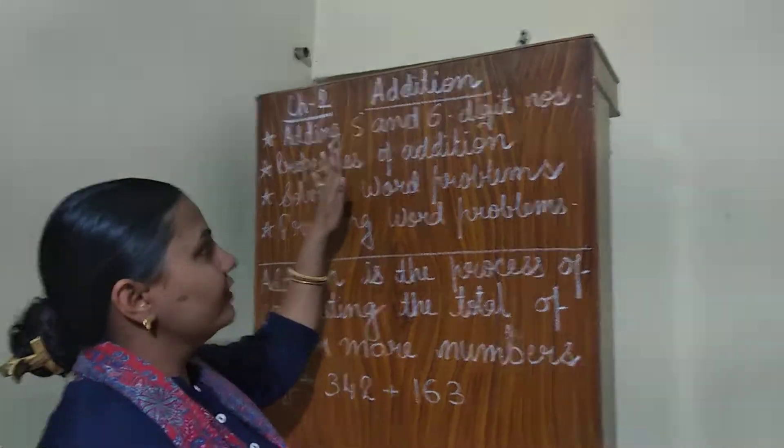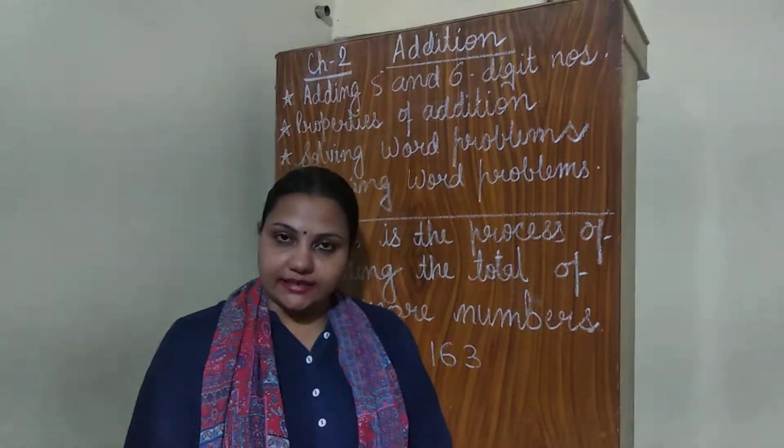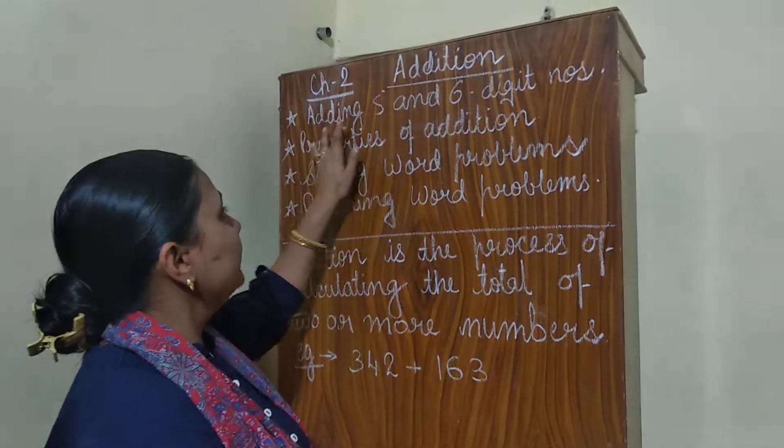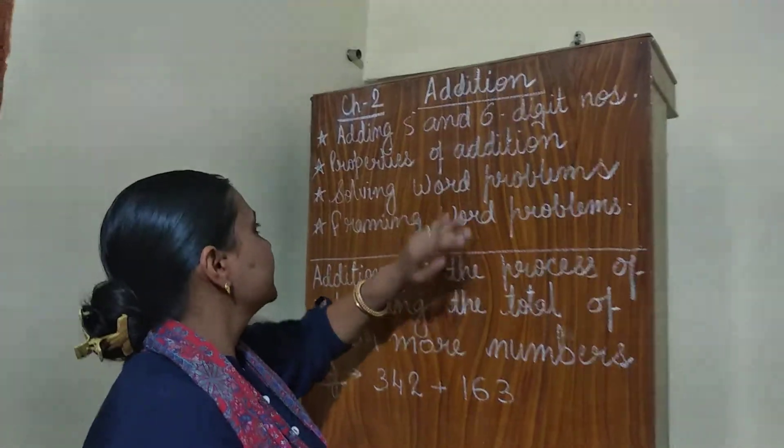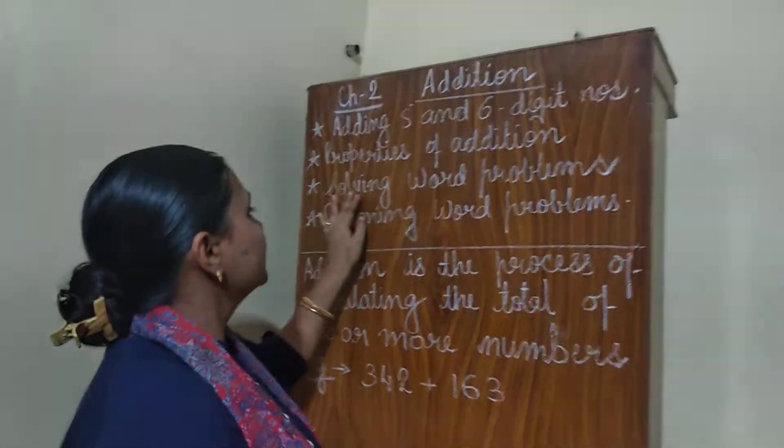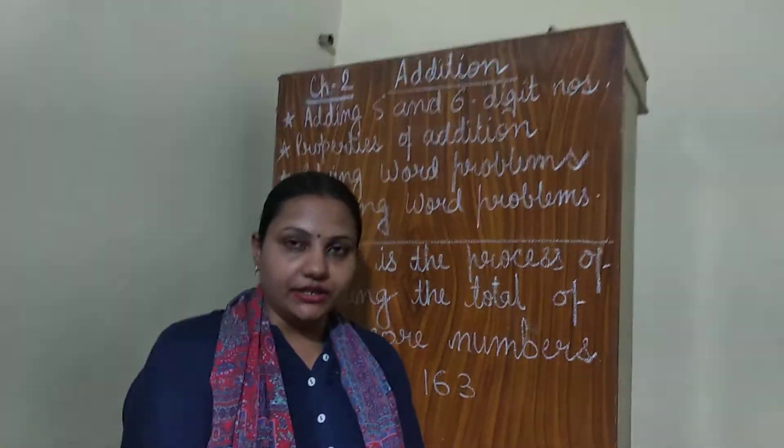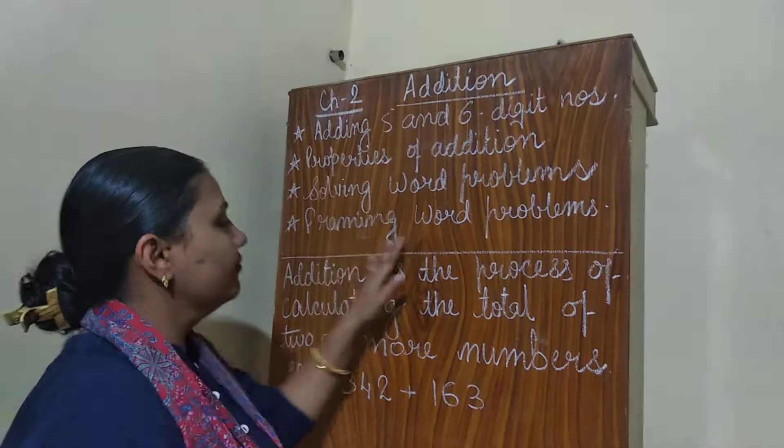Now what are the key concepts that we are going to learn in this chapter are adding 5 and 6 digit numbers, properties of addition, third is solving word problems based on addition and the fourth is framing word problems.